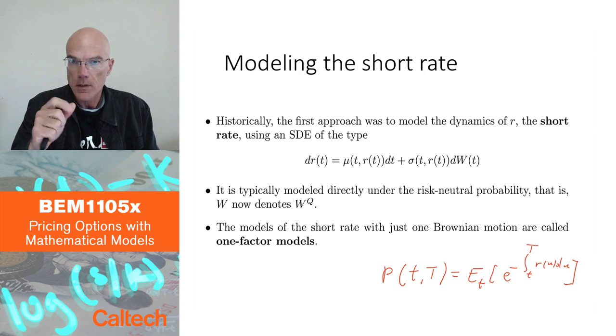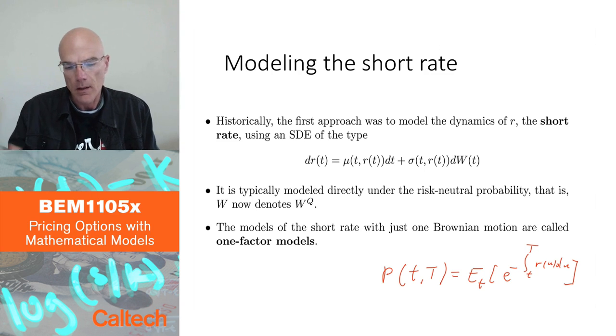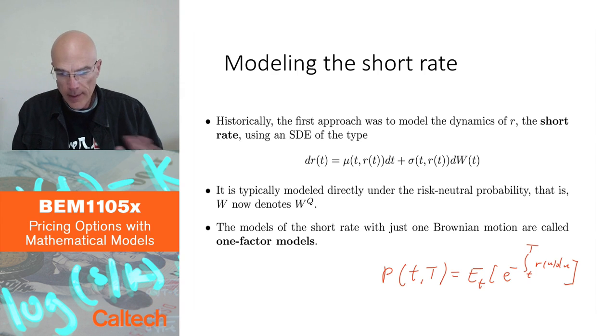which really means that you need two or three factors to fit the data well. And so, this is why later on we'll talk about other models. With the short rate, one Brownian motion models, usually you can't get the best fit. You can't really fit the data well.